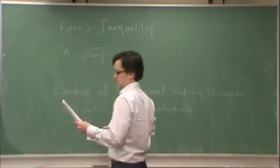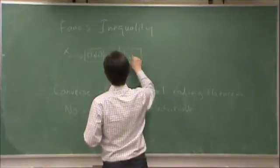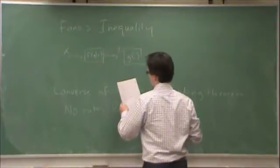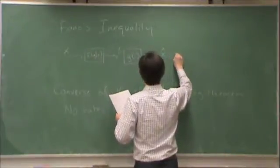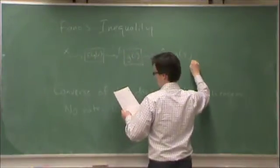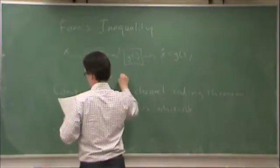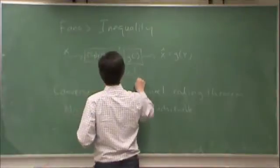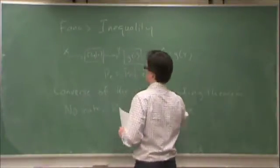With some probability of y given x, and then some processing function g, and then some estimate x hat, which is equal to g of y. And the probability of error is equal to the probability that x hat is not equal to what we sent x.